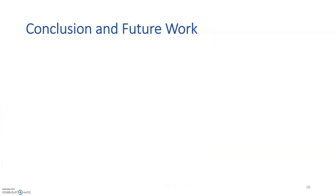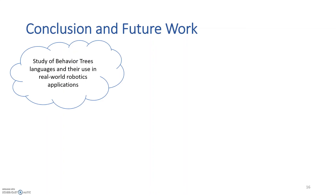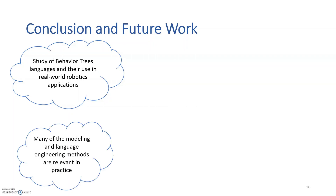To conclude, our analysis shed light on languages designed outside of the language engineering community for the robotic domain. We believe our analysis is beneficial for both communities, as it helps improve language engineering methods as well as the actual practices and languages. In our paper, we analyzed behavior tree languages to understand their key characteristics, modeling concepts, and design principles, and we also investigated their usage in real-world robotic applications. Our results illustrated that many modeling and language engineering methods are relevant in practice, and developing a language in a pragmatic way is successful and attracts practitioners not trained in language and modeling technology.